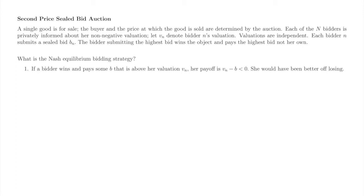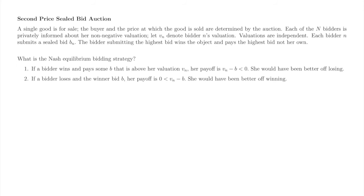First, fix some bidder little n. Whenever the highest bid not belonging to little n is greater than v_n, bidder little n is better off losing than winning. Whenever the highest bid not belonging to little n is less than v_n, bidder little n is better off winning than losing.